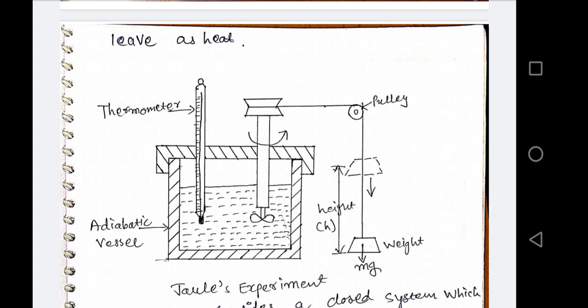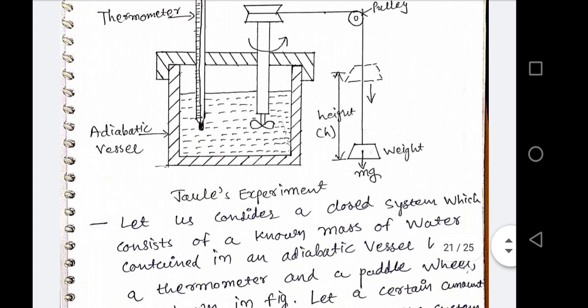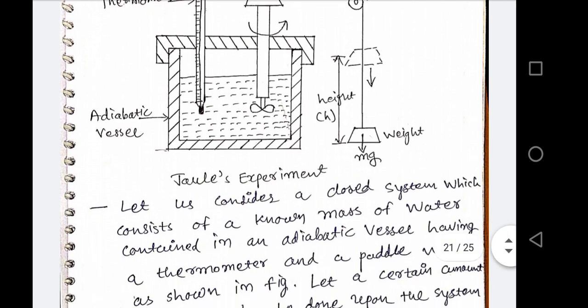This is the first experiment conducted by Joule to prove the statement of the first law of thermodynamics: when we provide work, we get heat from the system; when we provide heat, we get work at the output of the system. This is known as Joule's experiment.